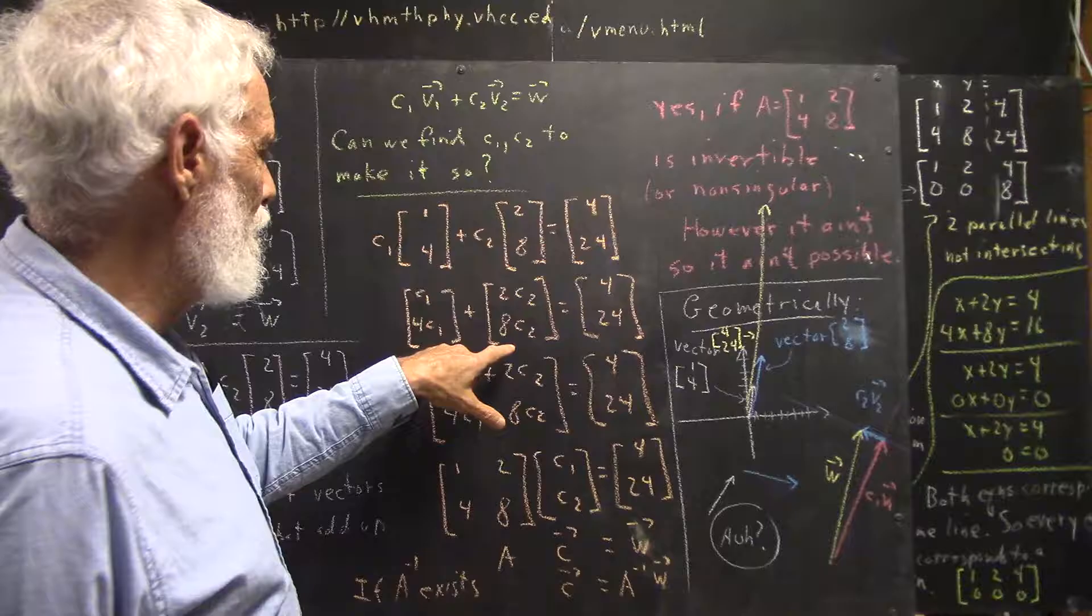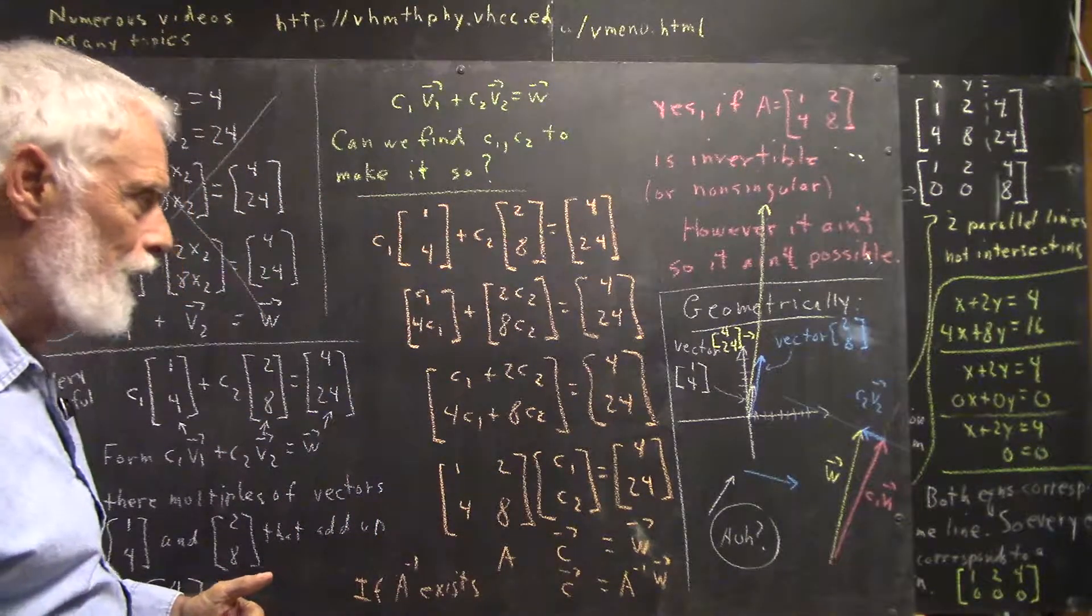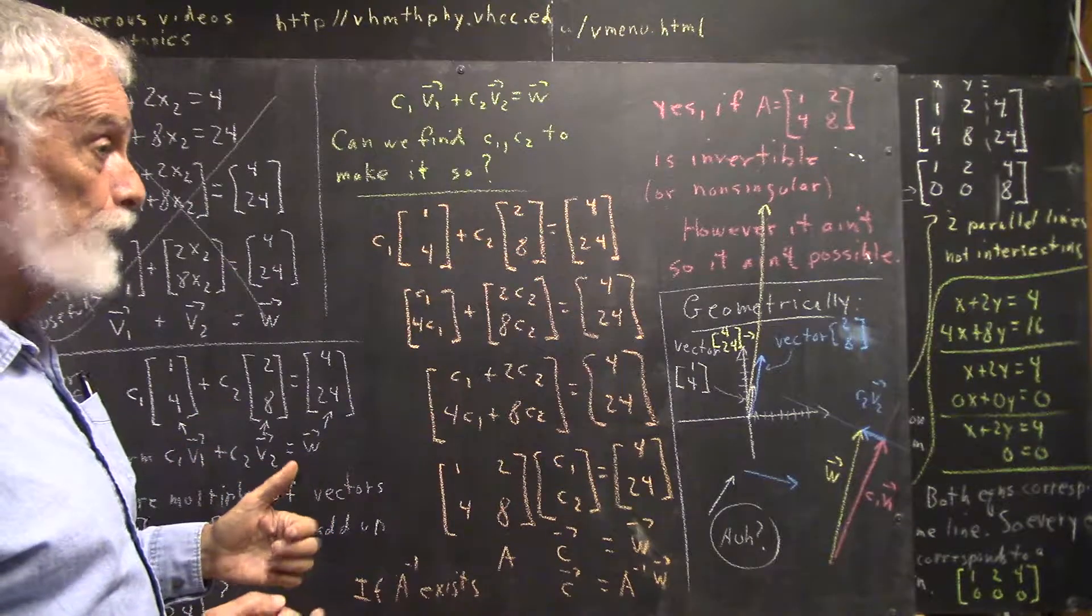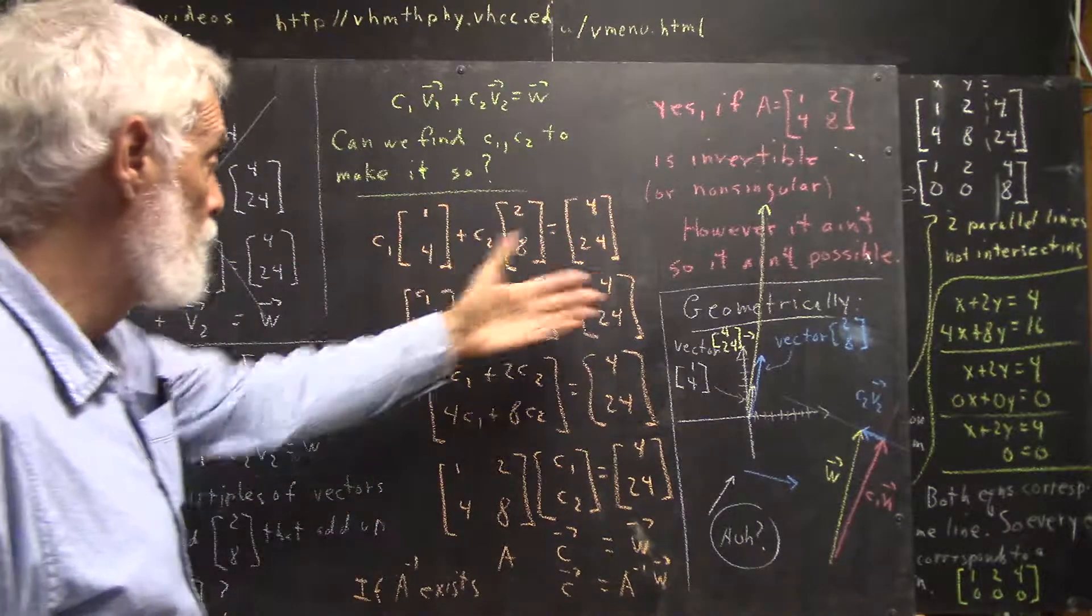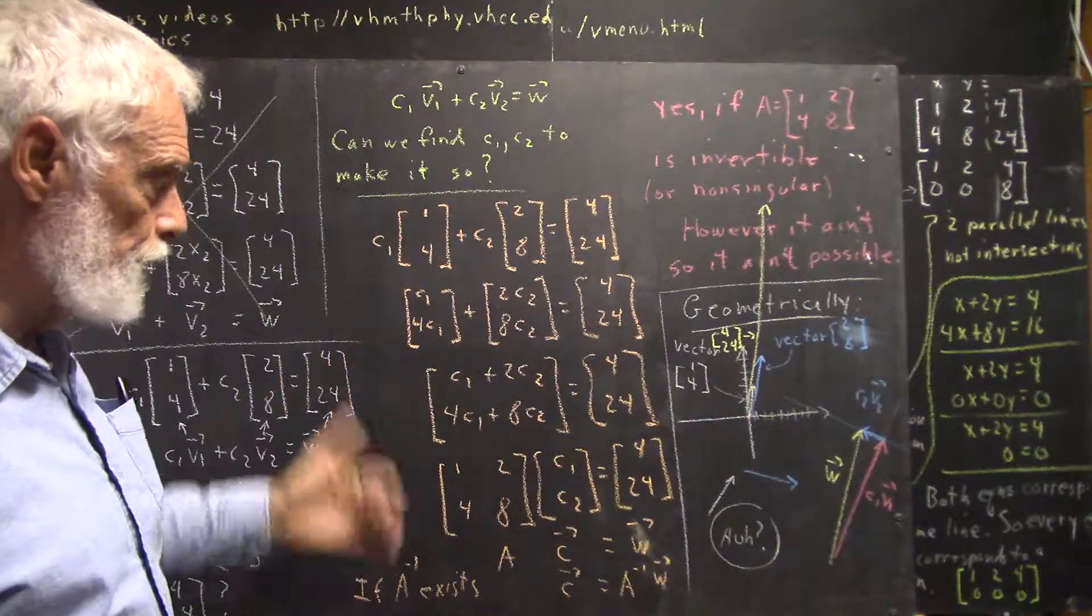At this point I noted that the second component is always four times the first here and here. Here it's six times the first. You can't add two vectors where the second component is four times the first and get a vector where the second component is anything but four times the first. So you're not going to be able to do it.